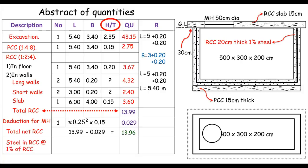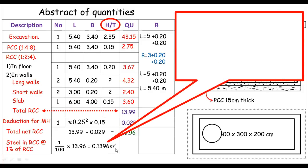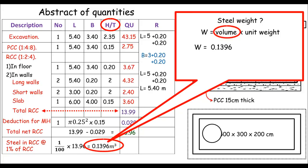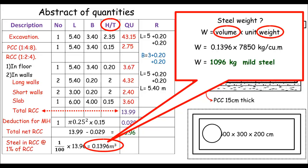The steel work is 1% of RCC work, meaning 1/100 of 13.96 cubic meters = 0.1396 cubic meters (volume of steel). To find the weight, we multiply volume by the unit weight of mild steel, which is 7850 kg per cubic meter. Weight of steel = 0.1396 × 7850 ≈ 1096 kg of mild steel.